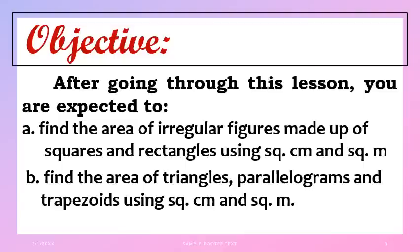So, there are two things you will learn to solve here. First is the area of irregular figures — meaning a combination of rectangles and squares. And then letter B is the area of triangles, parallelograms, and trapezoids. This lesson is easy, children.